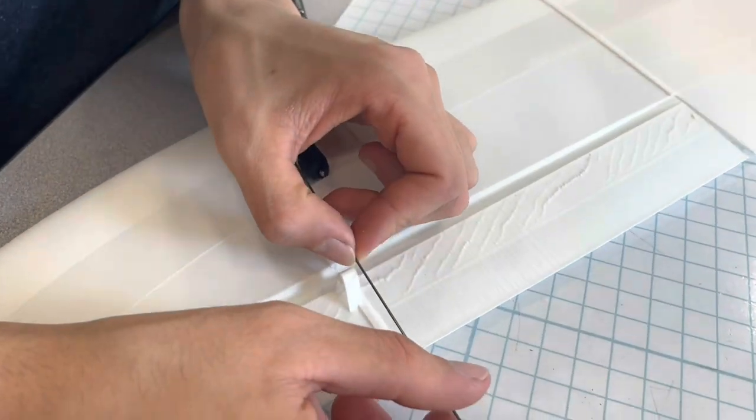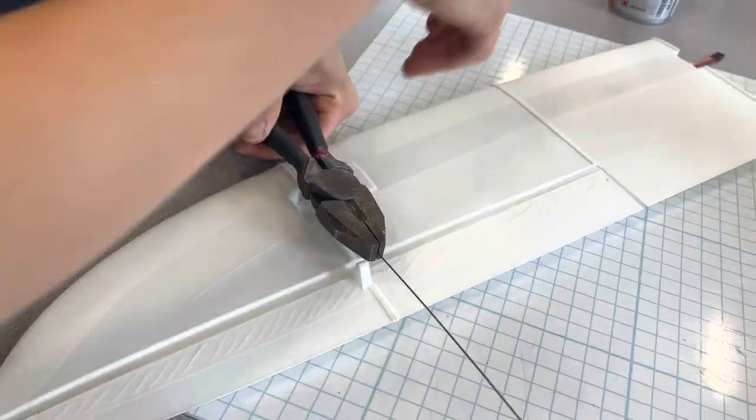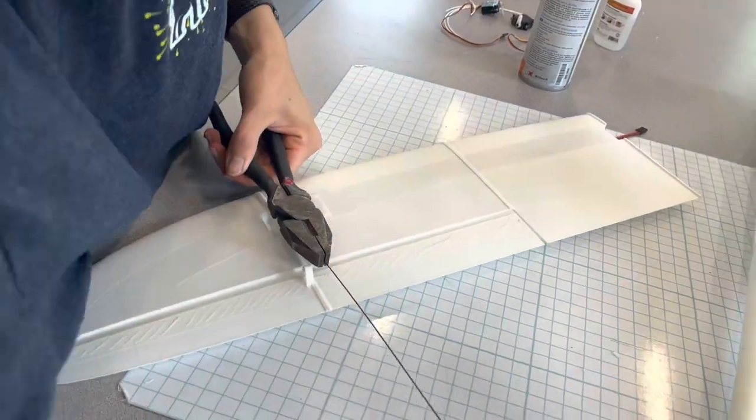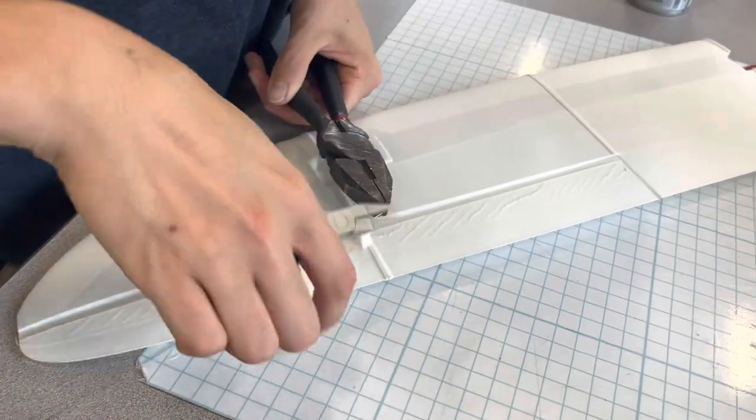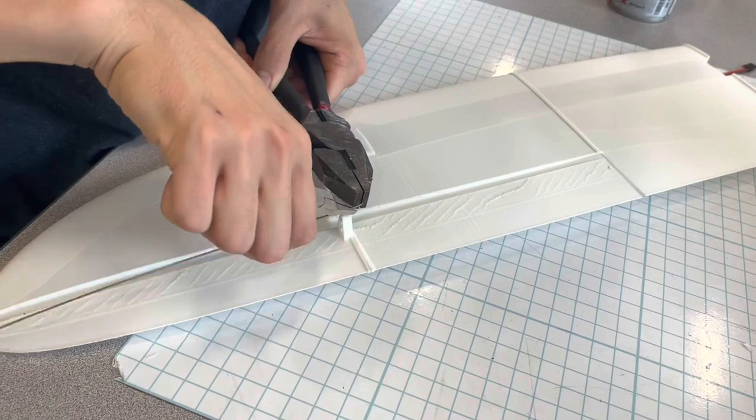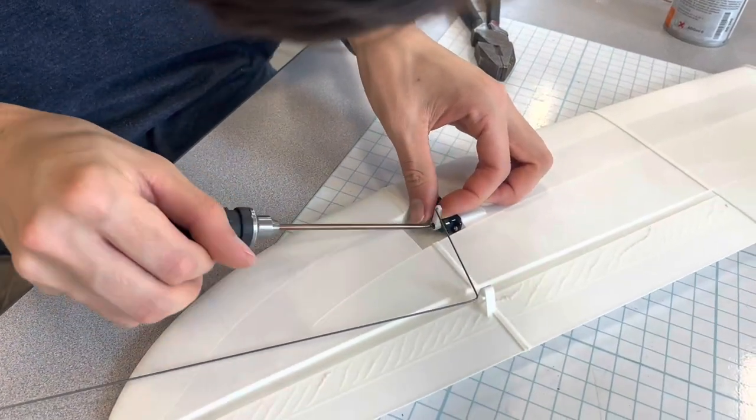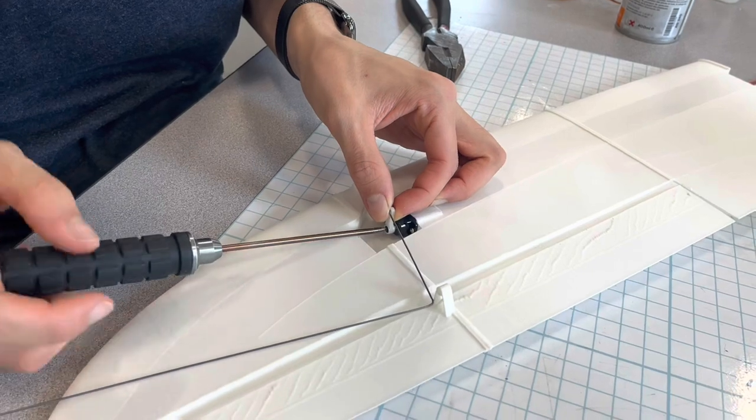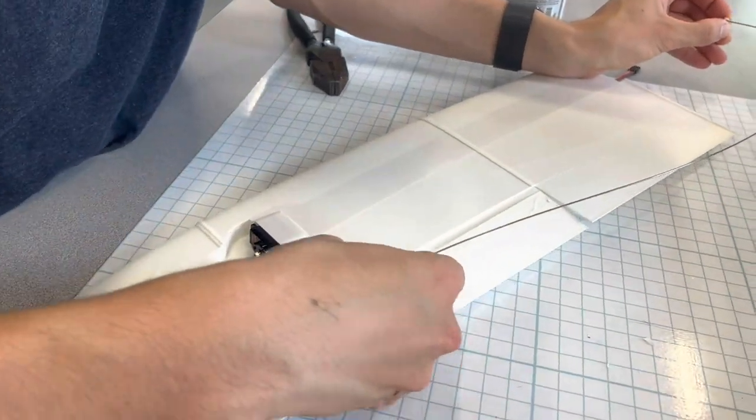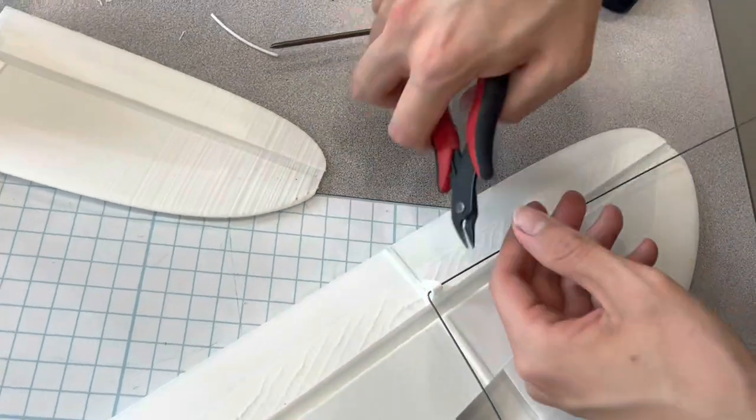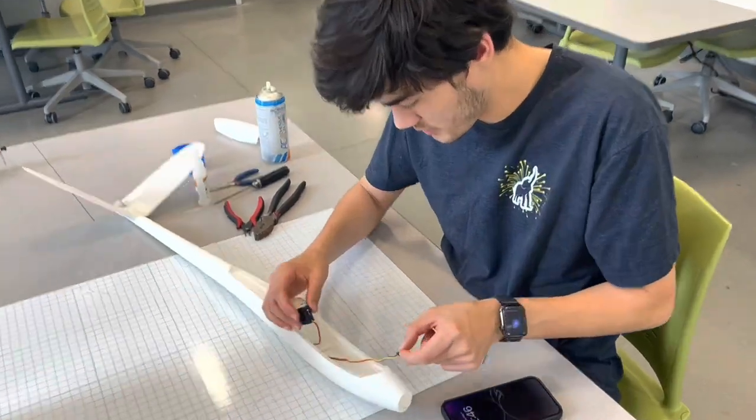And then we're going to mark where it goes into here. We're going to use our large pliers to grab onto the rod at that exact spot and use our smaller pliers to bend the rod at a 90 degree angle. Once that's complete we'll go ahead and take the screw out of our servo and run our rod through the control point on the aileron. Now once this is complete we'll put our rod around about here. Now we will install the servo in the fuselage.